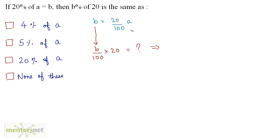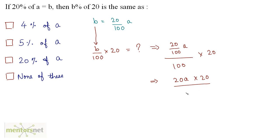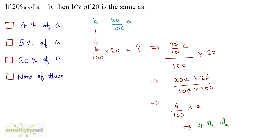B is 20 upon 100 times A. So we get (20/100 × A) divided by 100, times 20. This simplifies to 20A × 20 upon 100 × 100. Cancelling one of the 100s gives us 4 upon 100 times A, which is the same as 4% of A.